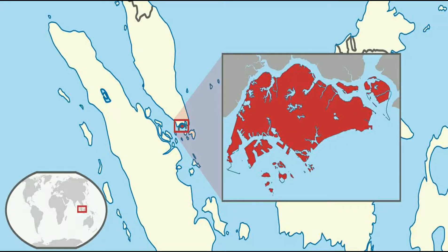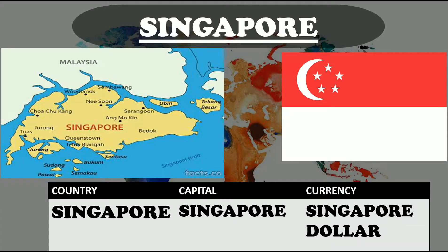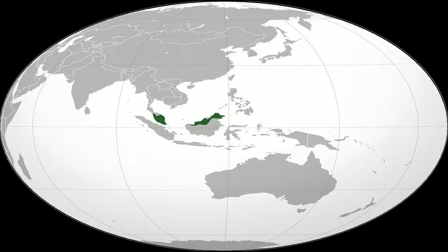The next country is Singapore — a very small part in the lower region. It is sometimes referred to as the Lion City, the Garden City, or the Red Dot. It is a sovereign city-state in Southeast Asia, lying one degree north of the equator at the southern tip of Peninsular Malaysia. This is the map of Singapore. Its capital is Singapore. Its currency is the Singapore Dollar. And this is the flag — a horizontal bicolor of red and white, charged with a crescent moon and a pentagon of five stars.